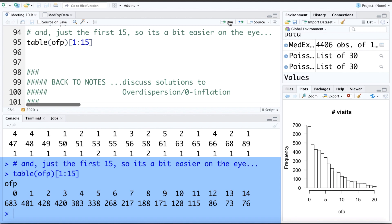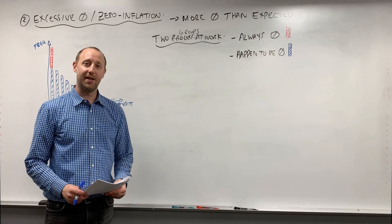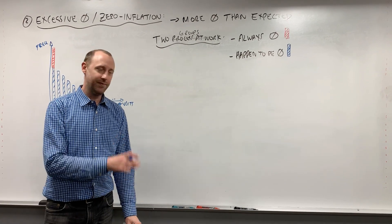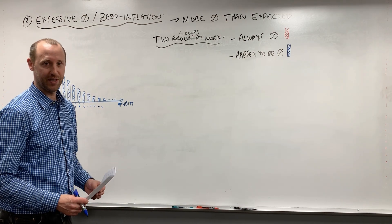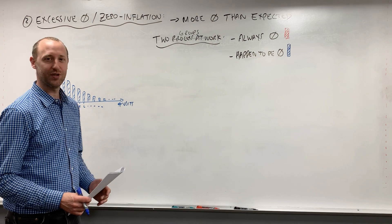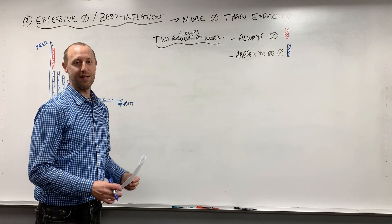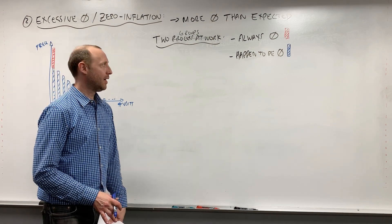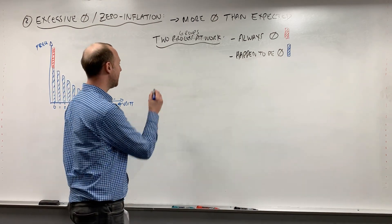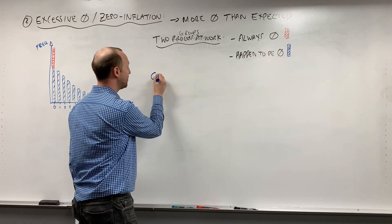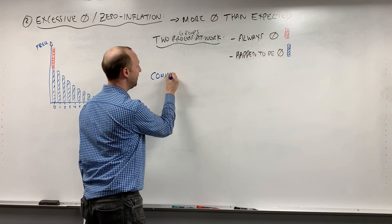So let's get back to discussing some of the solutions to dealing with this. Taking a look at the R data, or the medical expenditures data in R, we can see that there was excessive zeros or zero inflation. There was a much larger number of zero visits than would be expected for a Poisson distribution. So we're going to talk a little bit in concept about the common solutions to dealing with this.